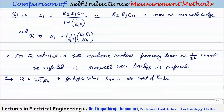For Q values less than 10, the frequency term cannot be neglected and creates problems, which is why the Hays bridge is used only for Q values greater than 10.